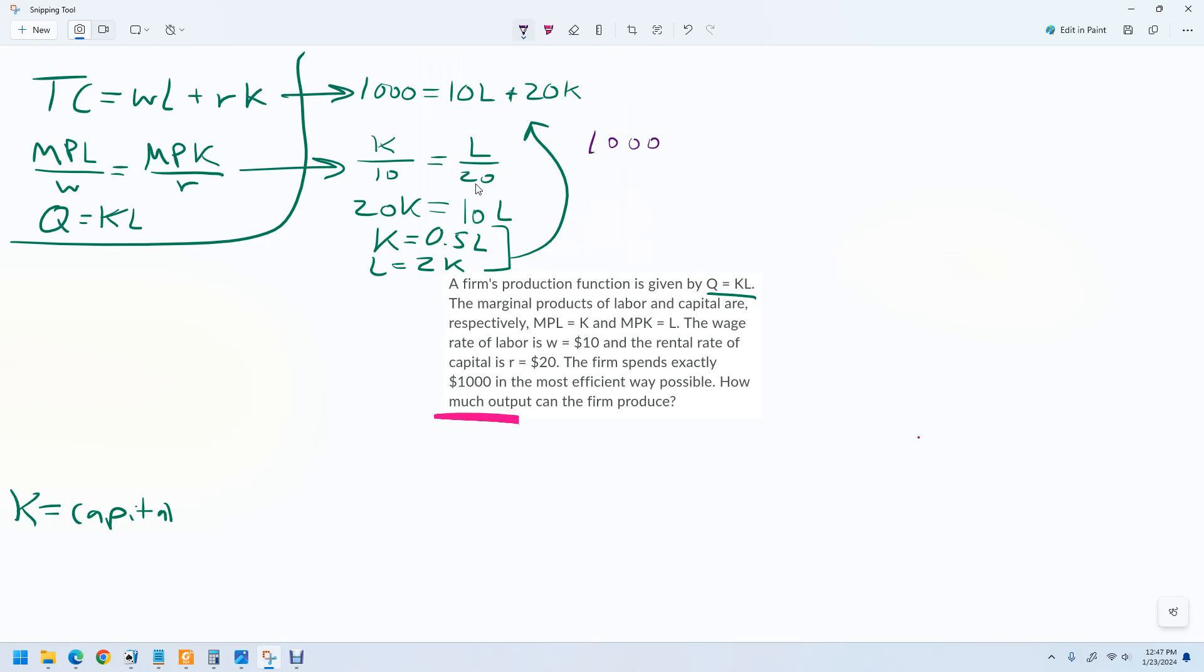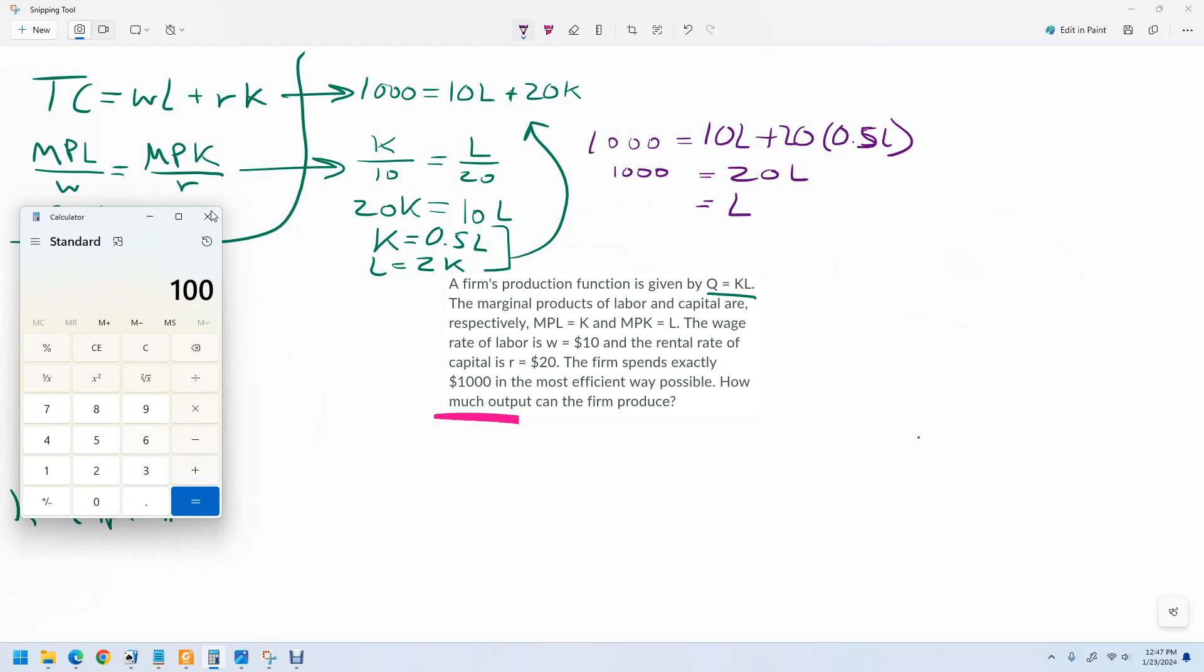So $1,000 equals 10L plus 20, and then we're going to plug in this function here. So 0.5L, and this becomes 10L. This becomes 20L equals 1,000, and then L should be 50. Let's make sure. 1,000 divided by 20 is 50. That's right.